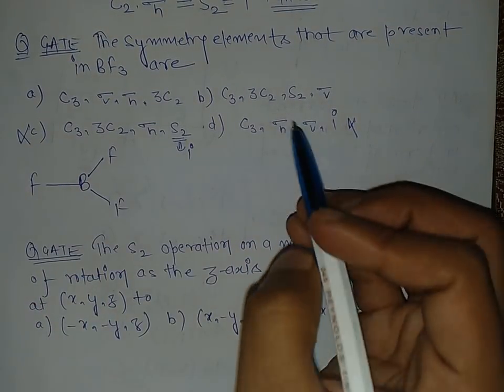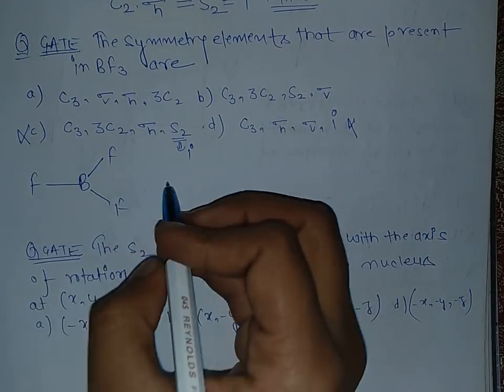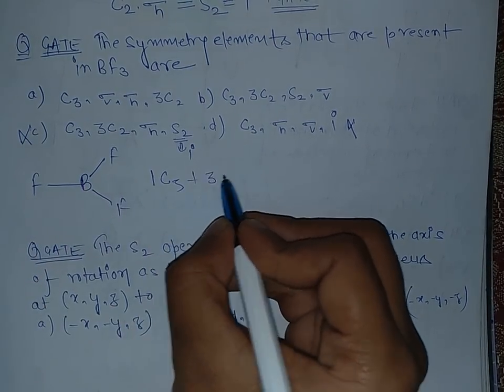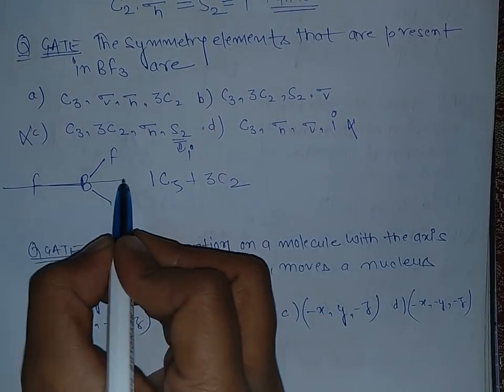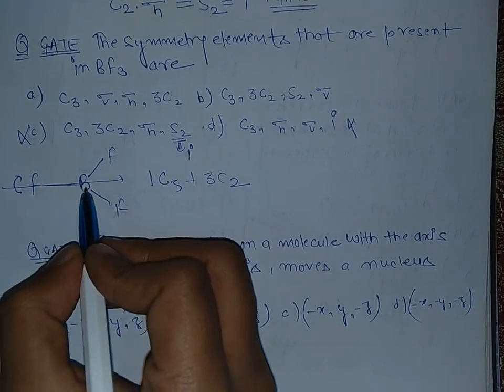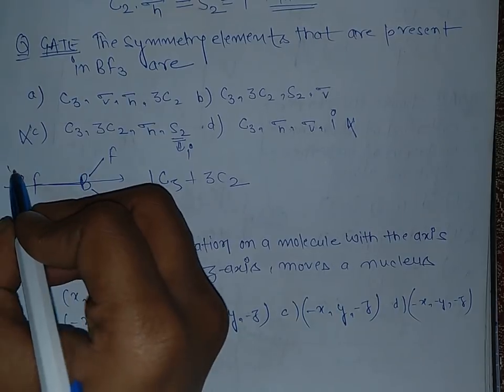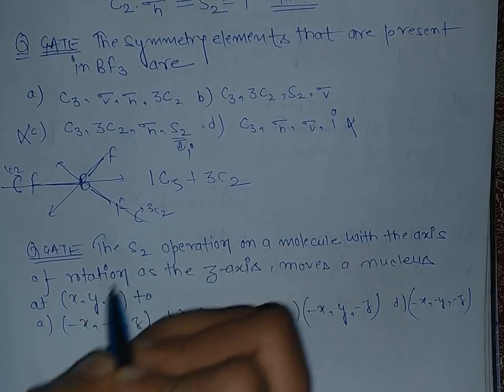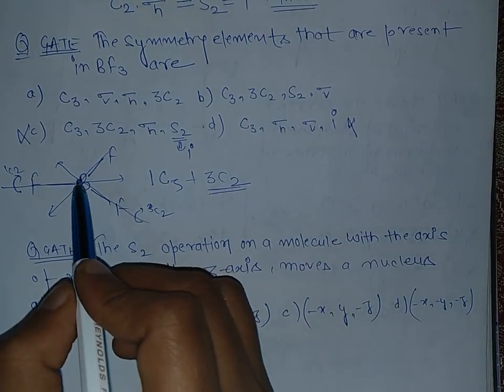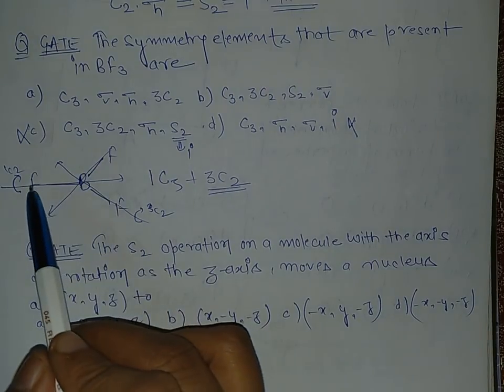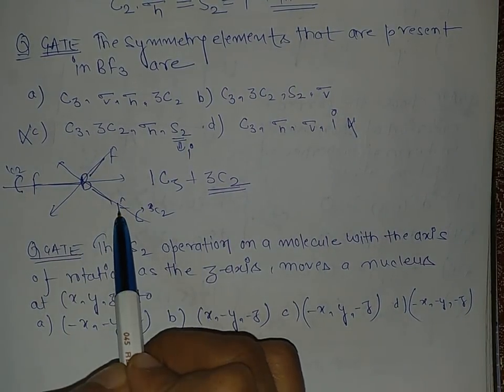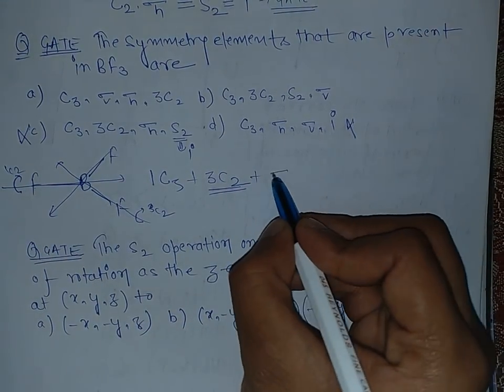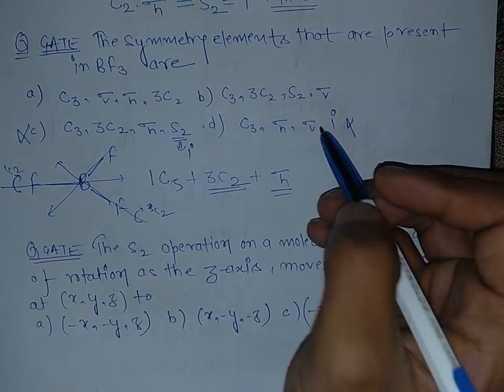In option B, we know that this BF3 has one C3 passing from the boron atom, and there are three C2s passing from this B and F, boron and F atom. So this is one C2, one C2 is from this, and one C2 is from this. So we have three C2s, and we have one sigma h plane bisecting this F-B-F and F atom. We can say it as a molecular plane also, so there is a sigma h also.